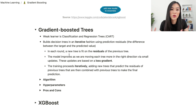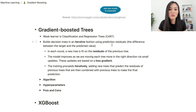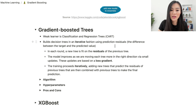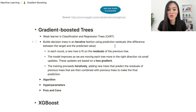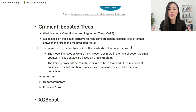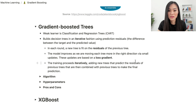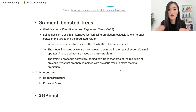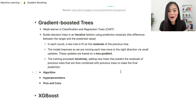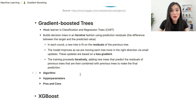Gradient boosted trees is a gradient boosting algorithm where the weak learner is classification and regression trees, or CART. It uses decision trees in an iterative fashion using prediction residuals — the difference between the target and the predicted value. In each iteration, a new tree is fit on the residuals of the previous tree, and the model improves by moving each tree more in the y direction via small updates based on a loss gradient.